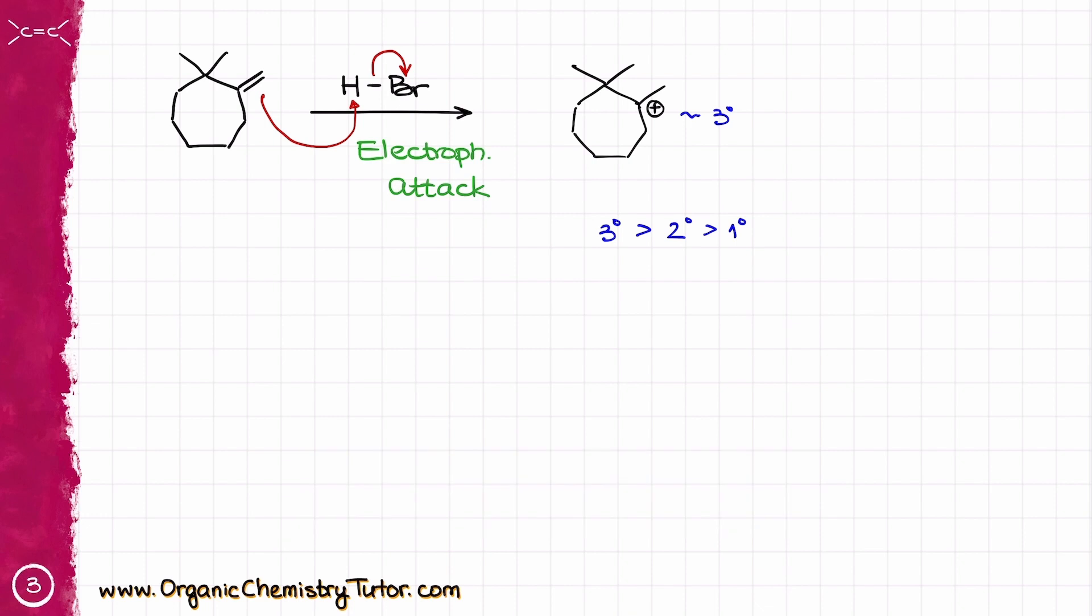As a matter of fact, there will be a rearrangement here. We know that a carbocation is going to rearrange if we can make a more stable carbocation. But this one is already tertiary. How can it be more stable than tertiary? There is no resonance here or anything else. What can happen here to make this carbocation more stable?